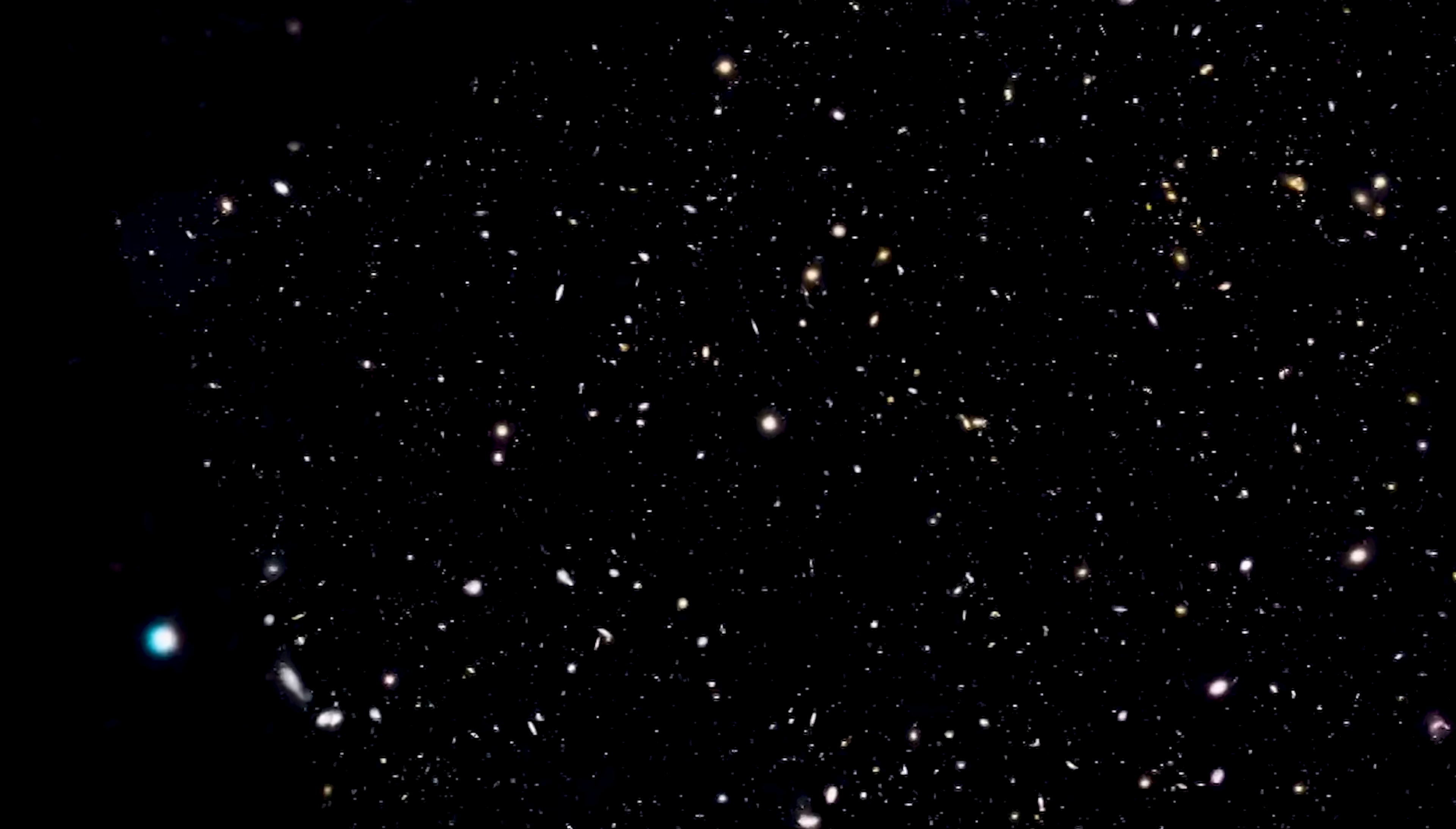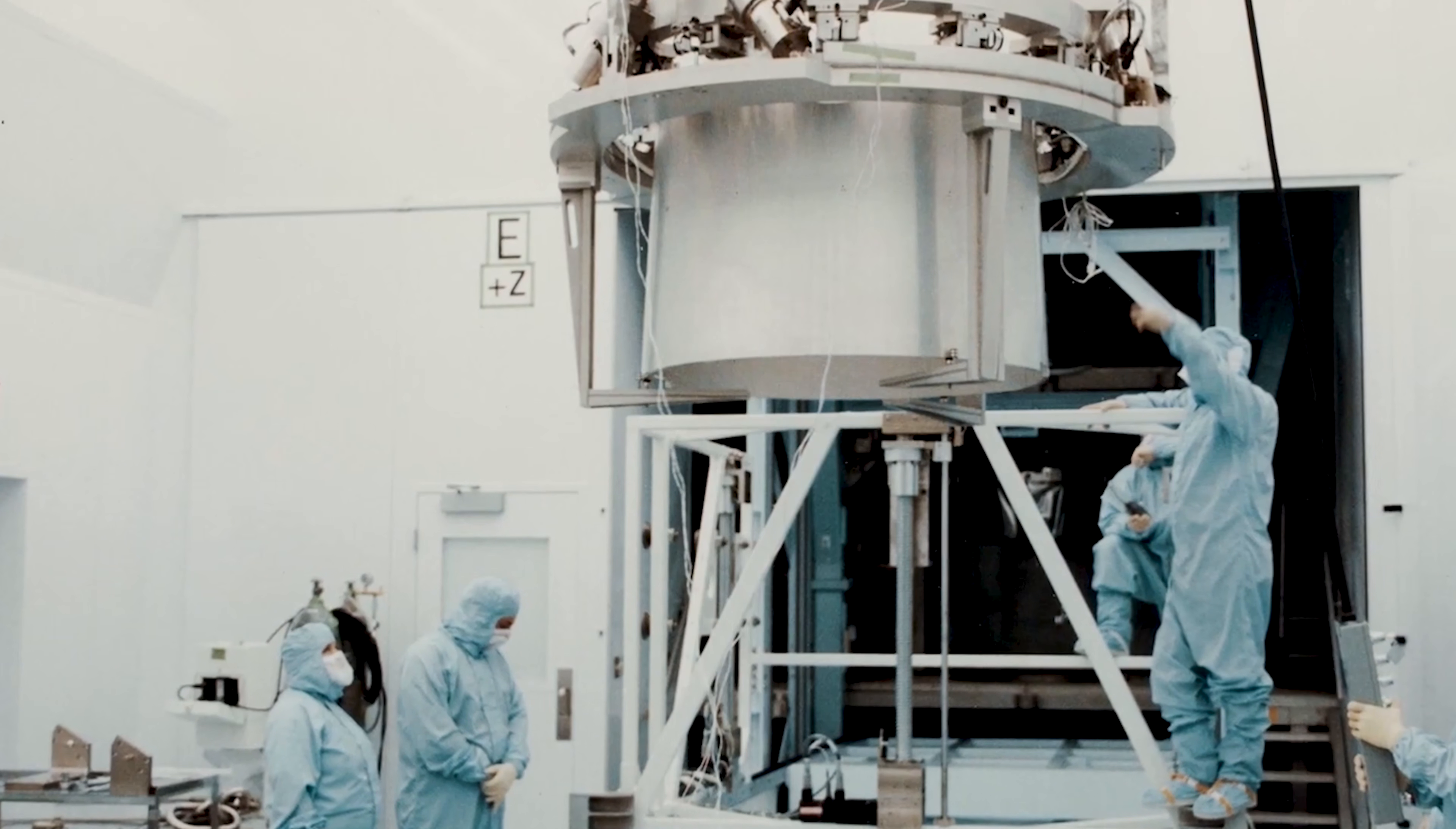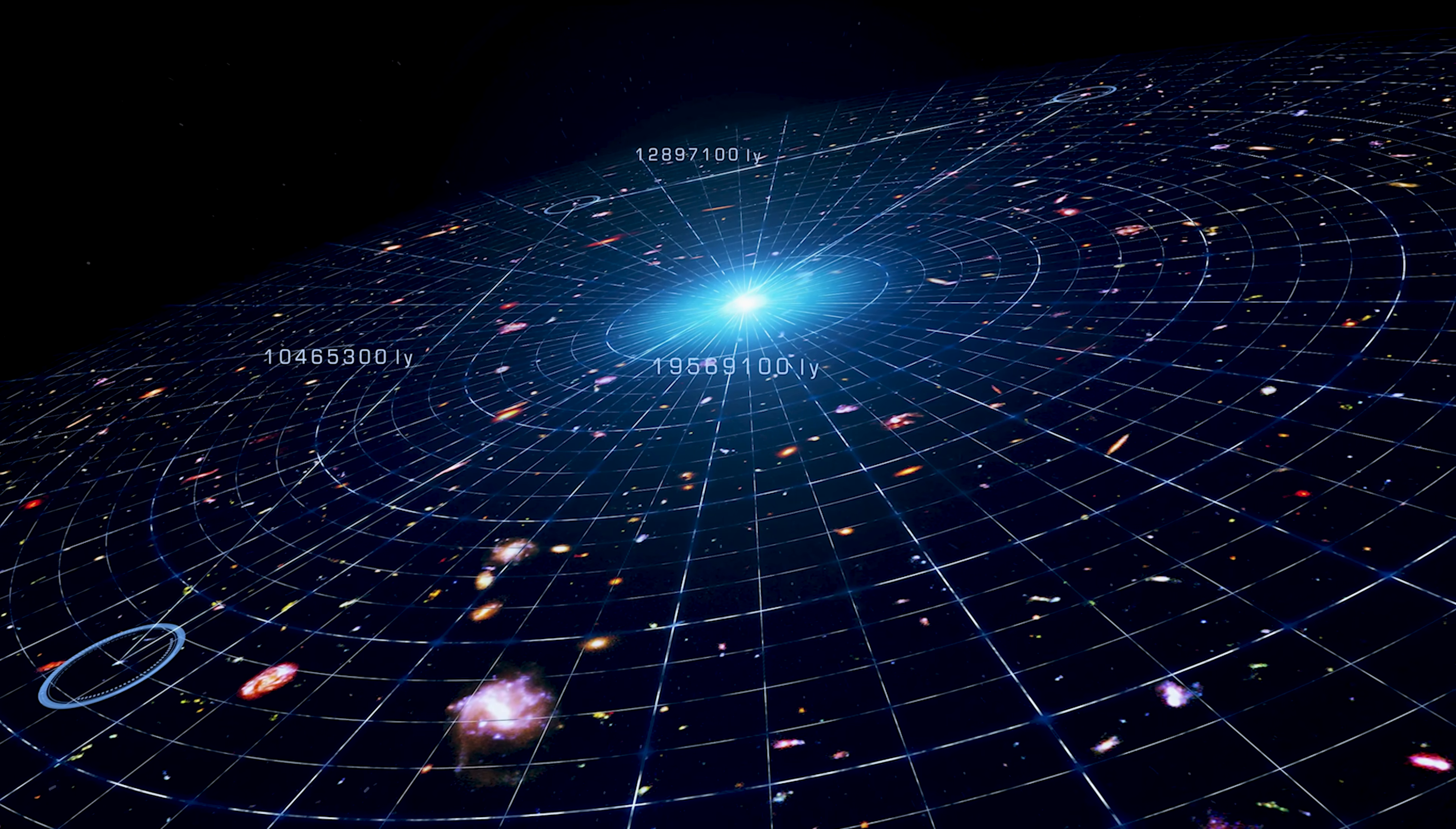Instead, many appeared surprisingly massive and well organized. When researchers expanded the sample to include another 20,000 galaxies, the mystery only grew. The data stubbornly refused to line up with established theories of how galaxies form and evolve. Some scientists have begun to ask an almost unthinkable question. What if what we interpret as the expansion of the universe isn't telling the full story?